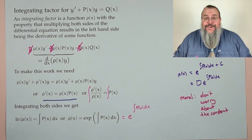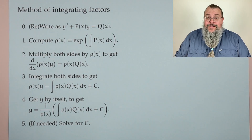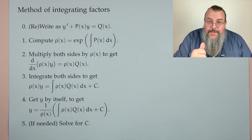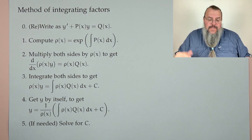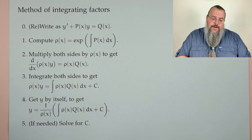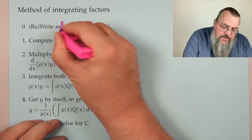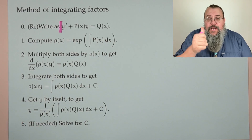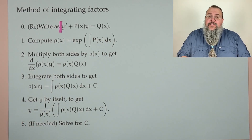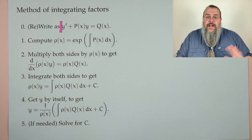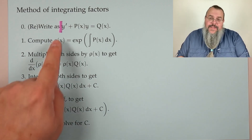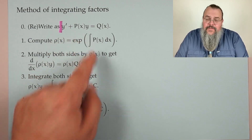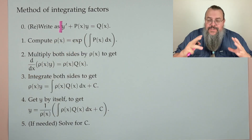Here's the process. Step zero: make sure the equation is in the right form — the coefficient of y′ must be 1. The next step depends on this, so if it's not 1, divide through first. Make sure y′ and p(x)y are on the same side.